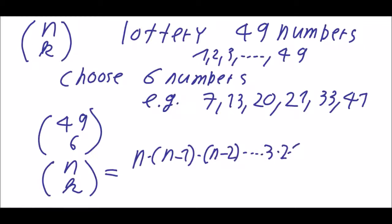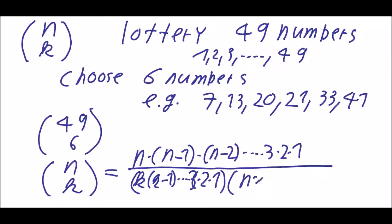3, 2, 1 divided by n minus k times n minus k minus 1 and so on times 3 times 2 times 1.